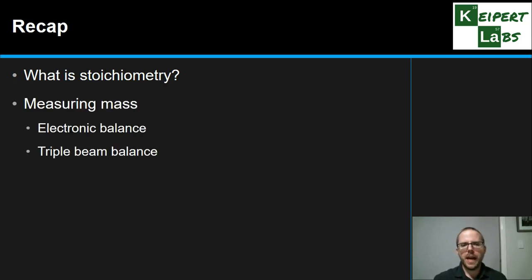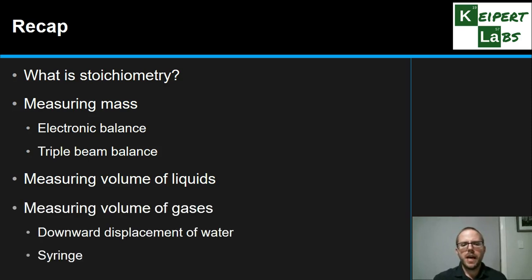And then we looked at how we can make measurements of mass using an electronic balance or a triple beam balance, how we can measure volume of liquids in containers like a measuring cylinder, and how we can measure or collect volumes of gases using downward displacement of water or a syringe. Thanks very much for watching. Bye for now.